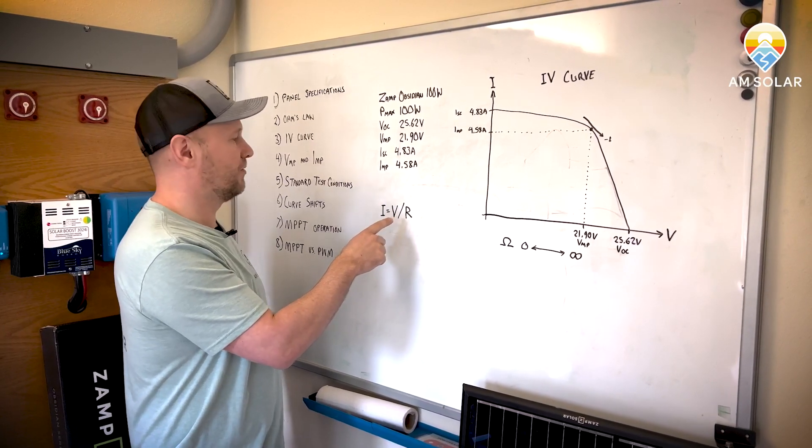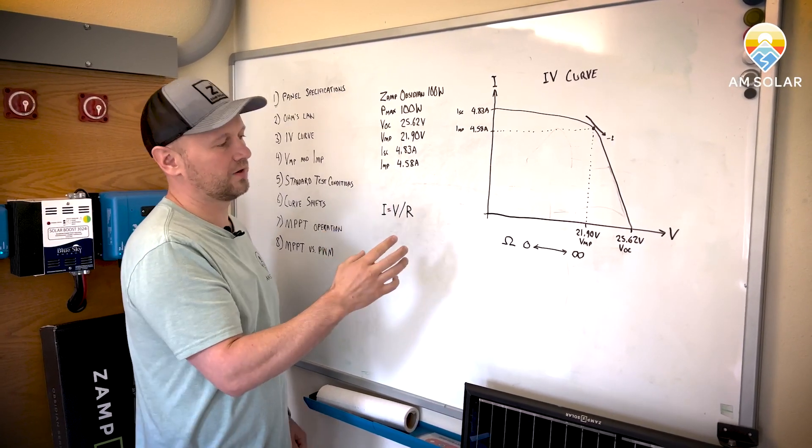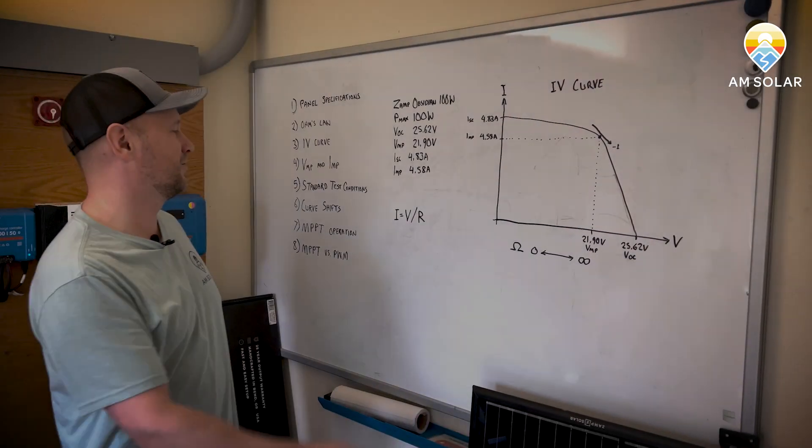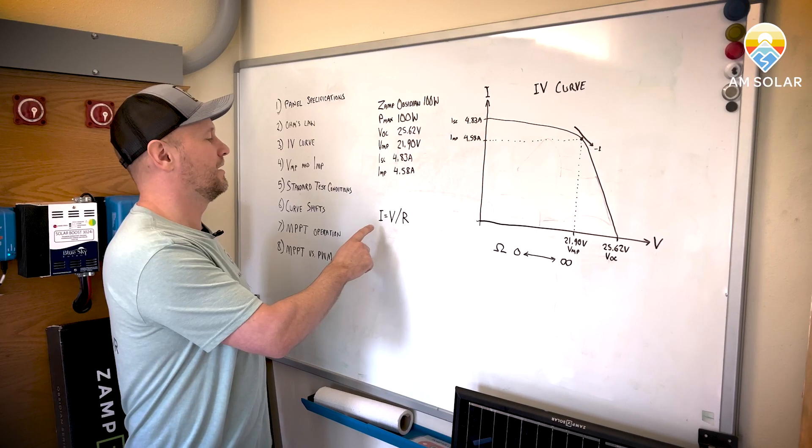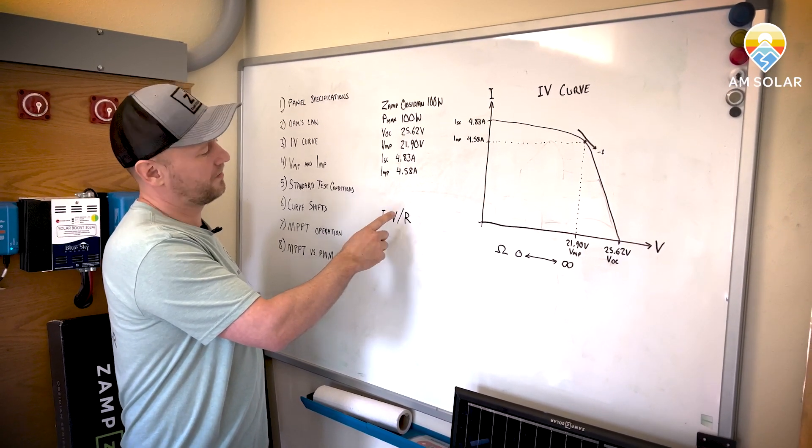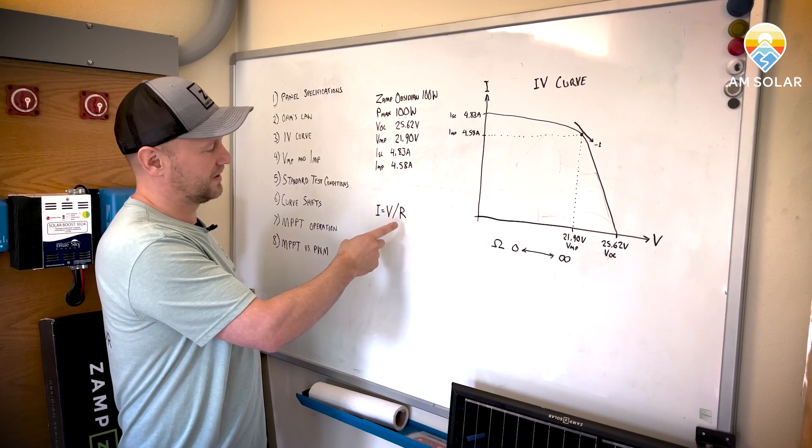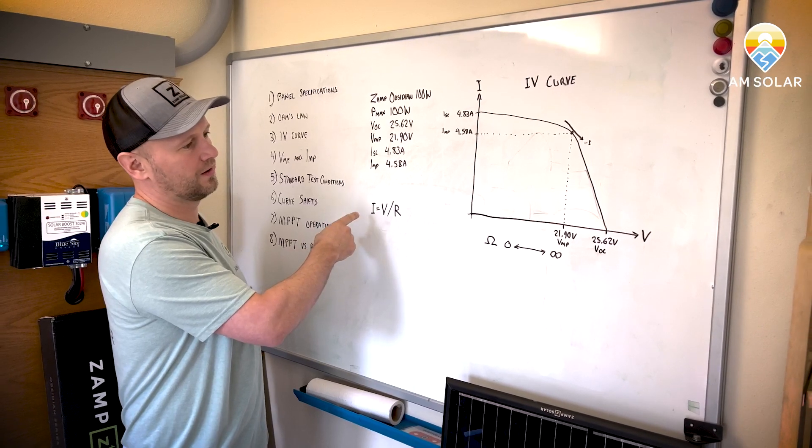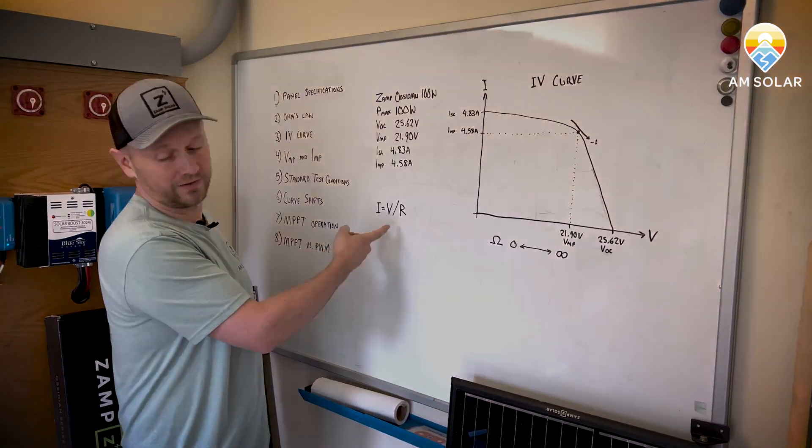And when you have your panel connected to a load, the load is the resistance. So with Ohm's law, you can see that if you have less resistance, you'll have more current. If you have more current, you'll have less voltage.